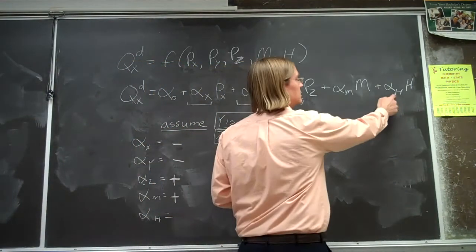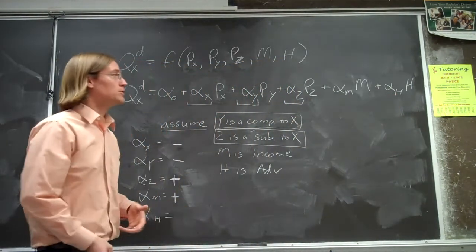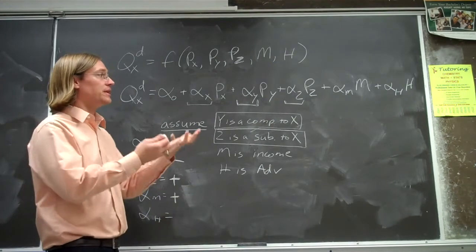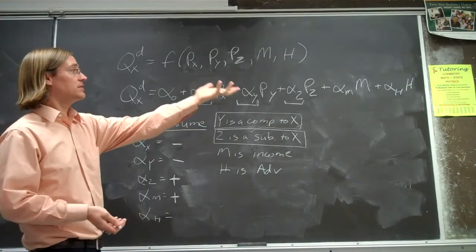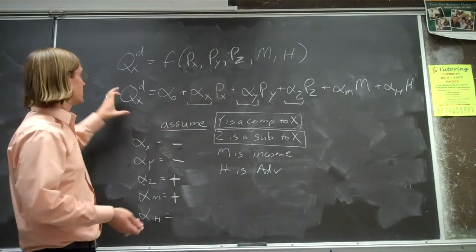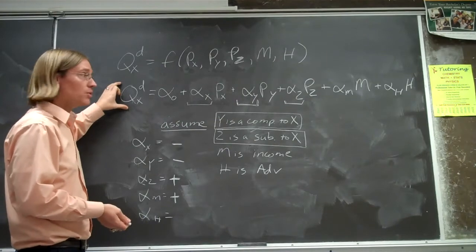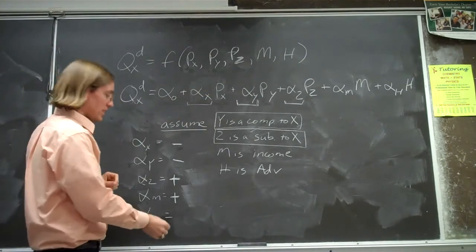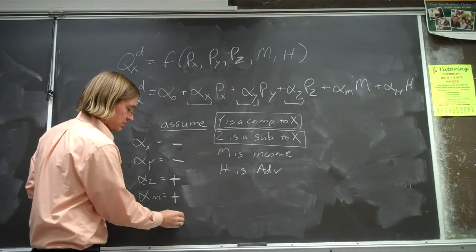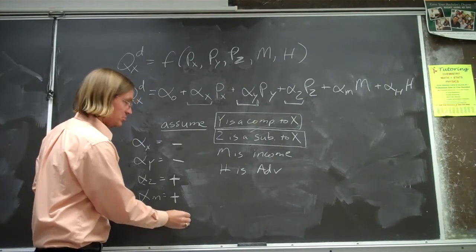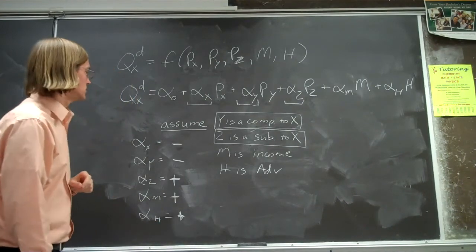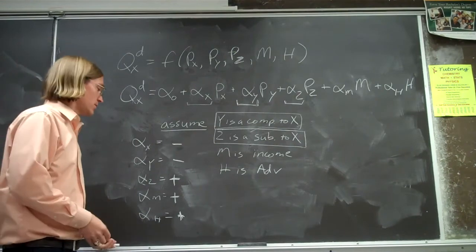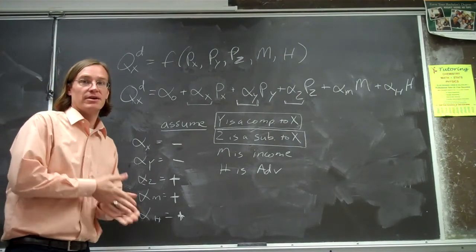For advertising H, if we're spending more money on advertising, H gets larger, and we would expect more product to be sold. So the sign on alpha-H should also be positive. Hope that clears up some of the confusion about demand functions.